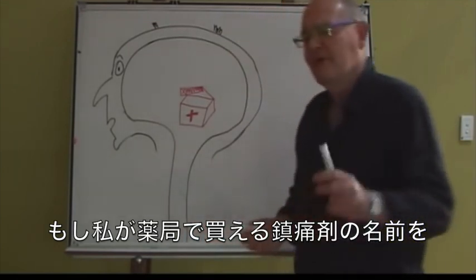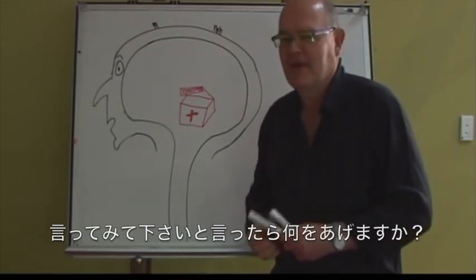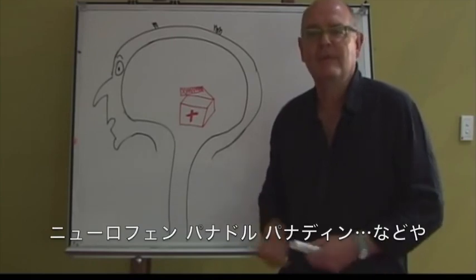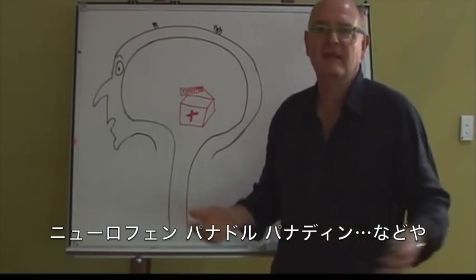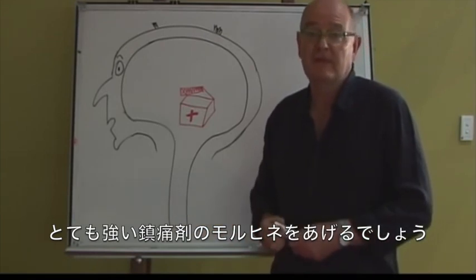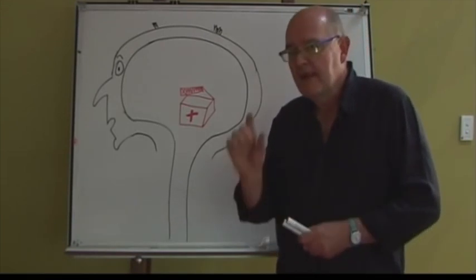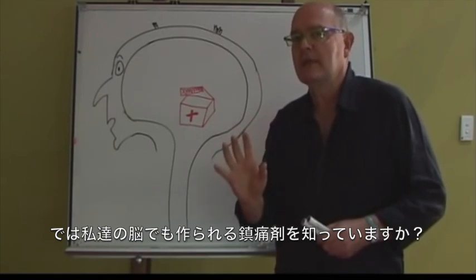Now, if I was to ask you to name the painkillers that you can buy from the pharmacy, you'd probably name Nurofen, Panadol, Panadine. You would also be aware that morphine is a powerful painkiller. But can you name the ones that your own brain makes?